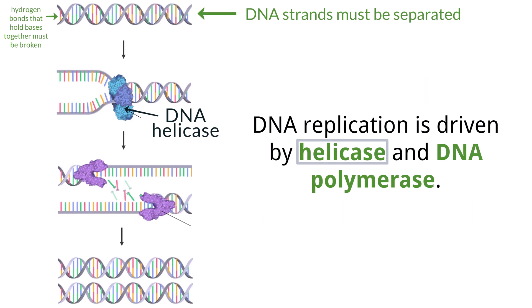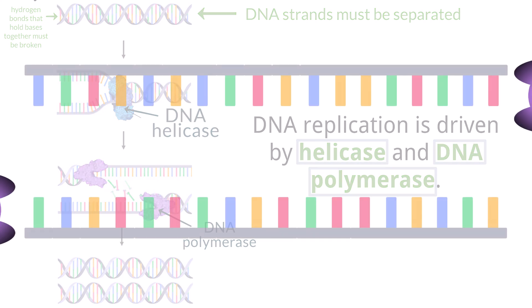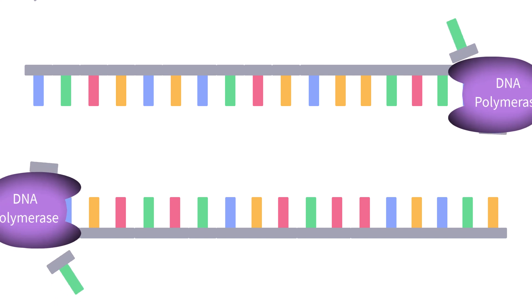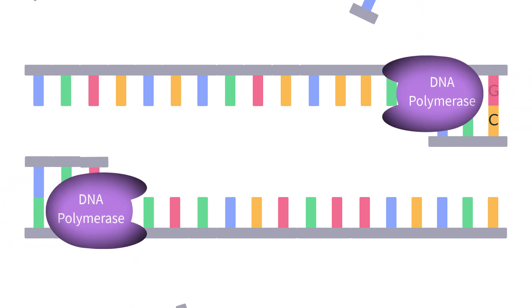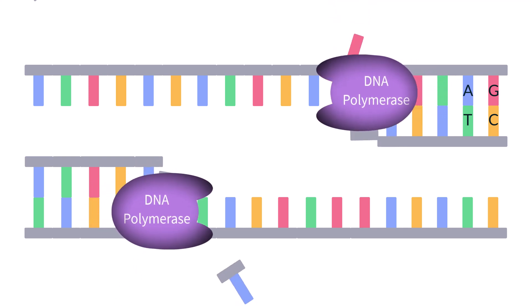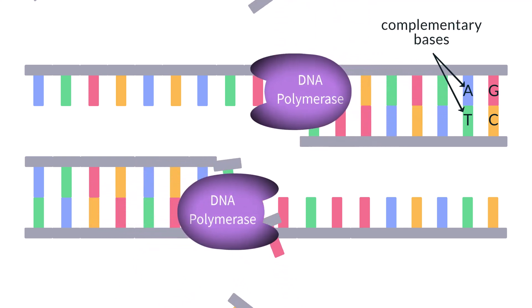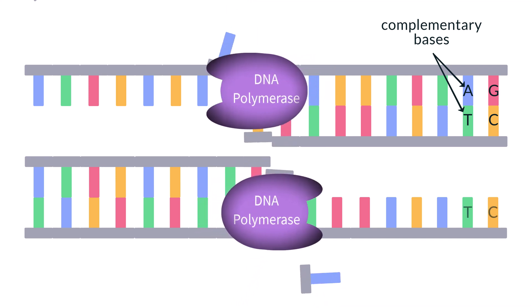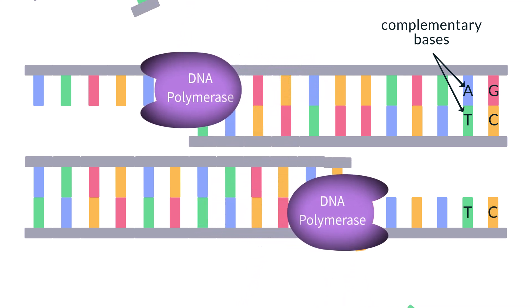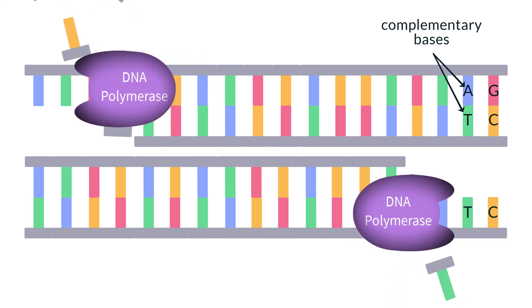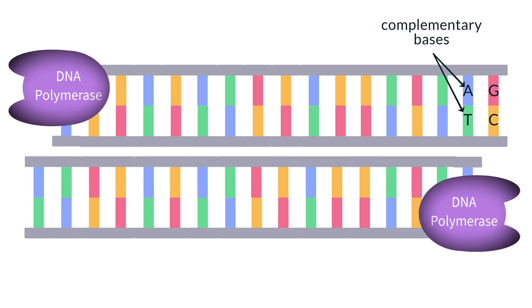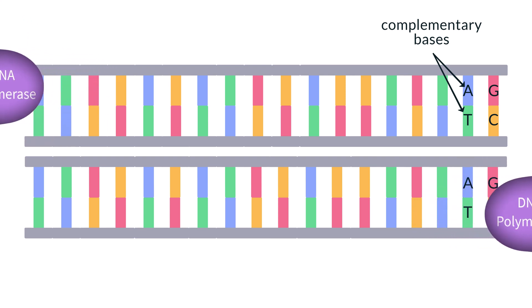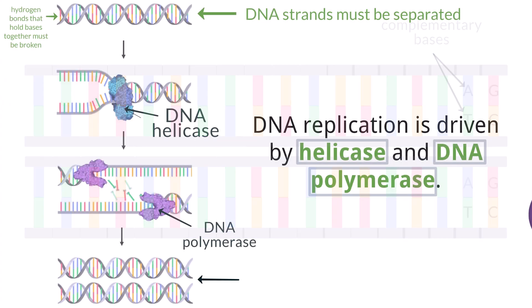With the bases on each strand freely exposed, another enzyme called DNA polymerase begins to add complementary bases to the open strands, which are acting as a template for the new strand being built. For every adenine base on the old strand, the DNA polymerase pulls in a thymine to pair with it, and it does the same for guanine and cytosine. The rule of complementary bases is followed here to ensure that the two strands of DNA end up being identical. The DNA helicase will continue to break and unzip the strand at different locations, while many DNA polymerase molecules work to build each new complementary strand. When the process is finished, the cell is left with two complete copies of DNA.